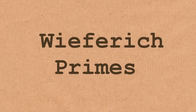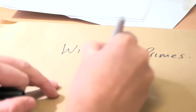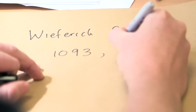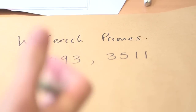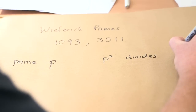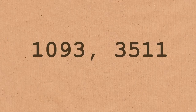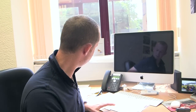Next in the sequence are the Wieferich primes. There are only two numbers in this sequence that we know of: 1093 and 3511. The Wieferich primes are any prime number P such that P² divides 2^(P−1) − 1, and it's true of these two numbers. We don't know if it's true of any others. A search has been carried out for Wieferich primes all the way up to 6.7 × 10¹⁵ and none more have been found.